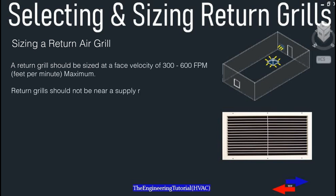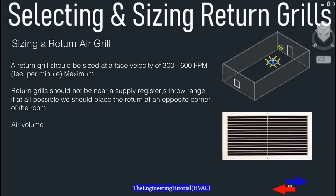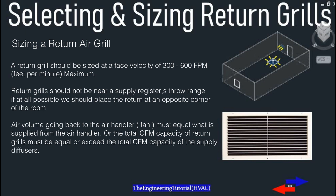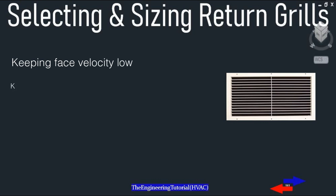A return grill should be sized at a face velocity of 300 to 600 fpm maximum. Return grills should not be near supply register throw range. If at all possible, we should place return grills at an opposite corner of the room. The air volume going back to the air handler fan must be equal to what is supplied.